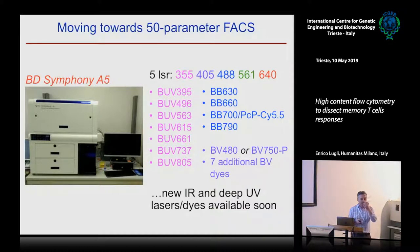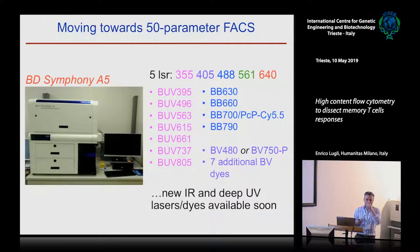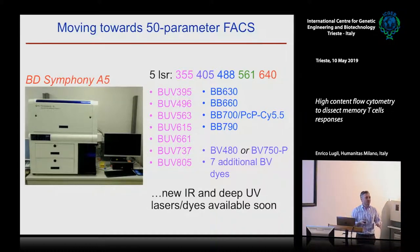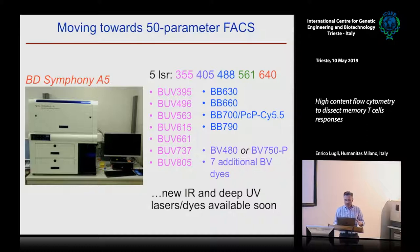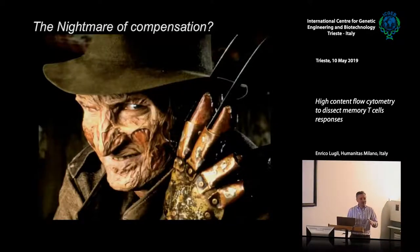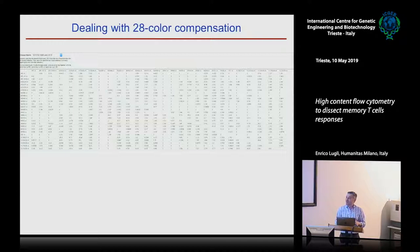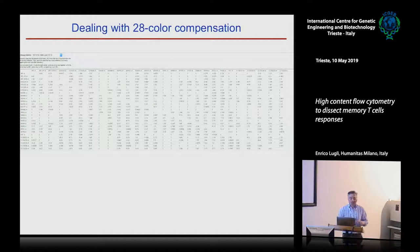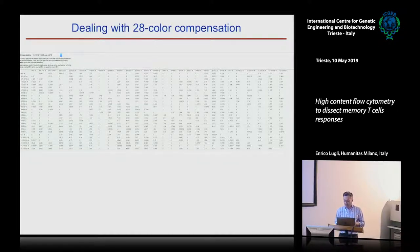You have talked about compensation and spreading error. The question is: if you put all these fluorochromes together — plus the other 20 in your array — giving 30 parameters, your compensation matrix is going to be a kind of nightmare. You're going to have something like a 28-by-28 color matrix. It's complicated because you have to check every single combination, and that's really undoable.